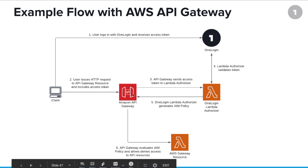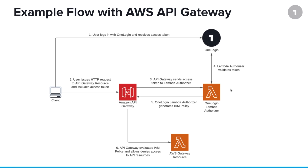In order to authorize access at the API gateway, a request is made to a Lambda function. That Lambda function enforces whatever policy is required and returns a policy document to the API gateway to indicate whether access should be granted or not. OneLogin has provided such a Lambda authorizer, which will validate the token in a series of different ways to ensure that the correct authorization decision is made.